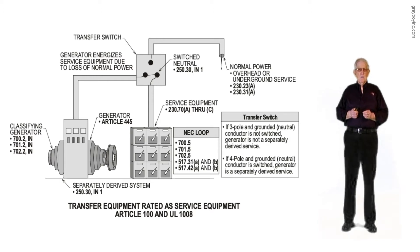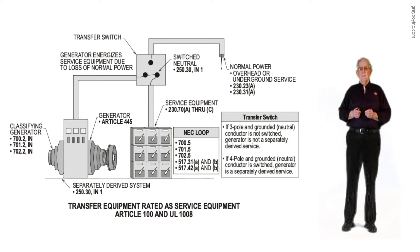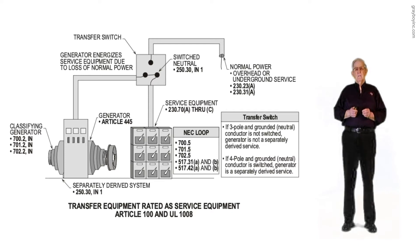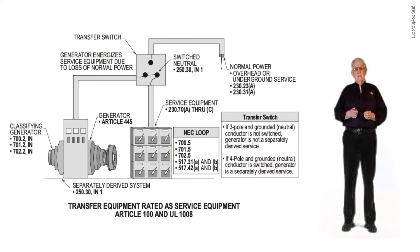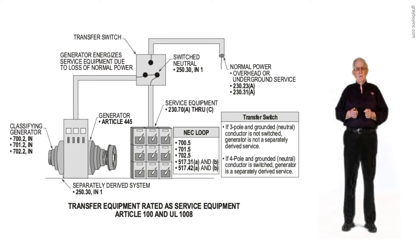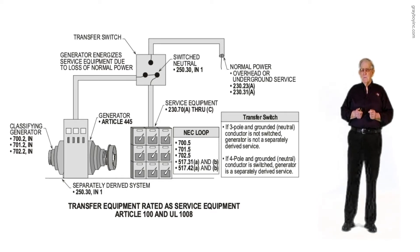If it's a 701.2 generator, then it could be brought on within 60 seconds and have a 15-minute delay characteristic. But notice if it's an emergency generator under 700.2, you can't mix the wiring with the general wiring of the facility.